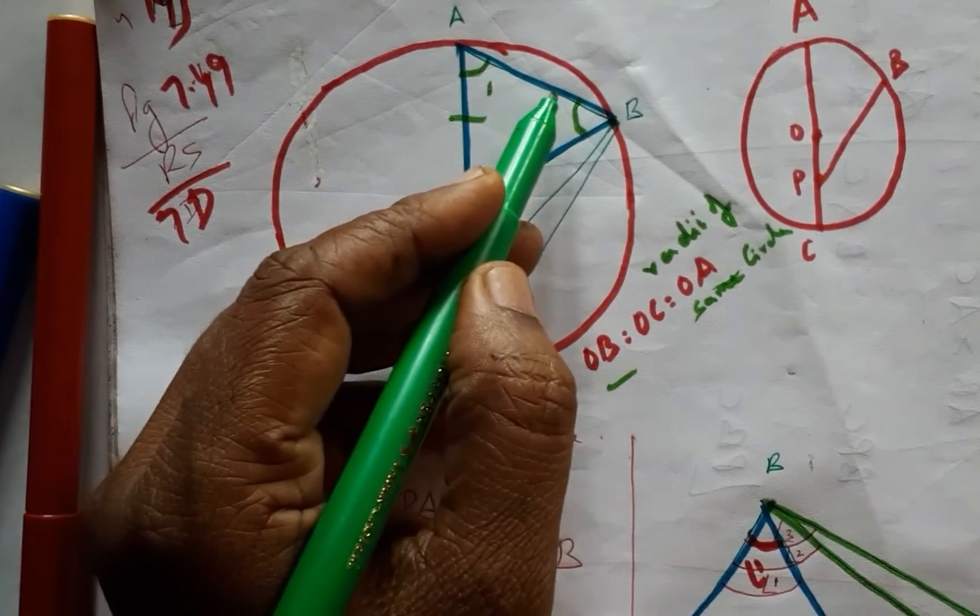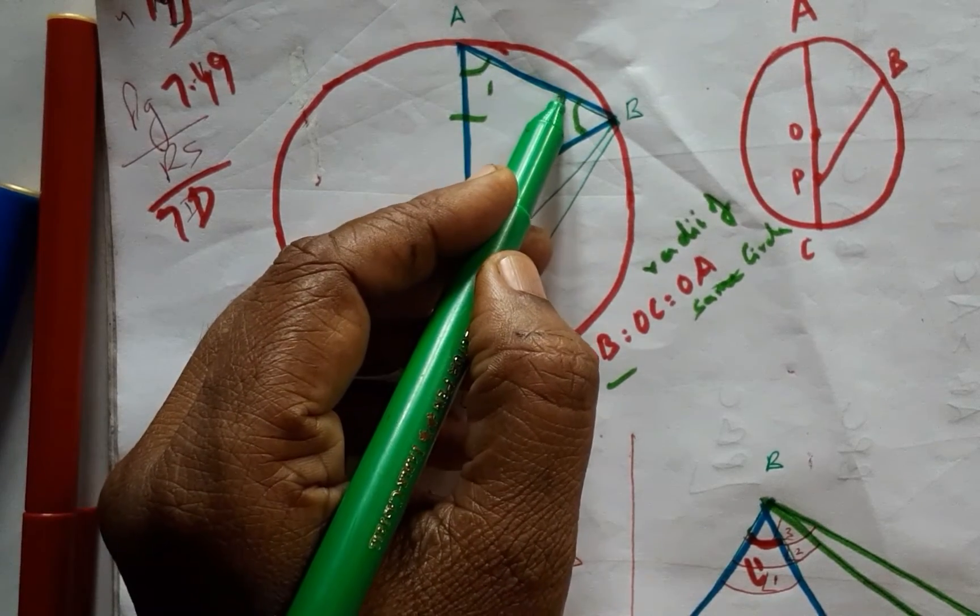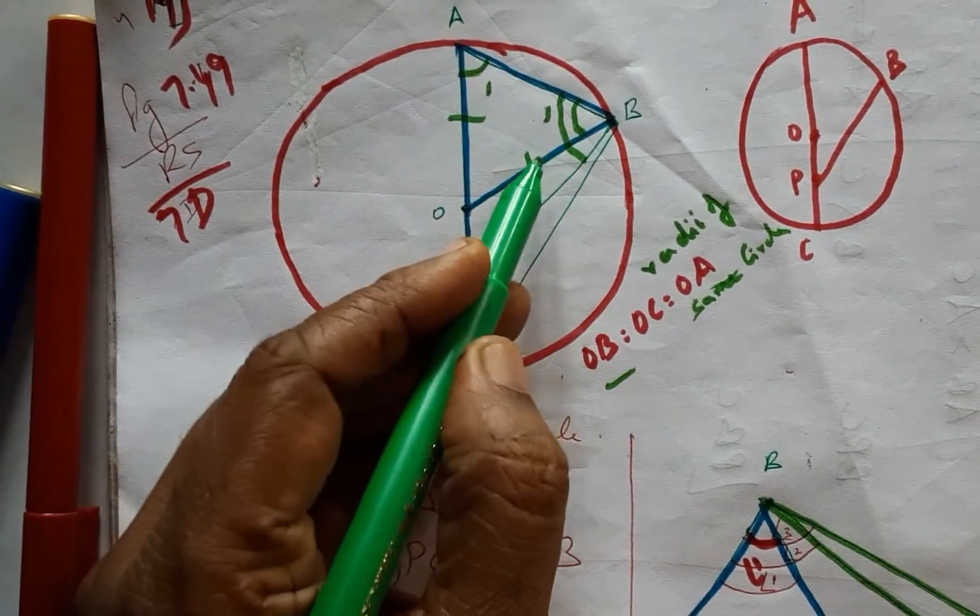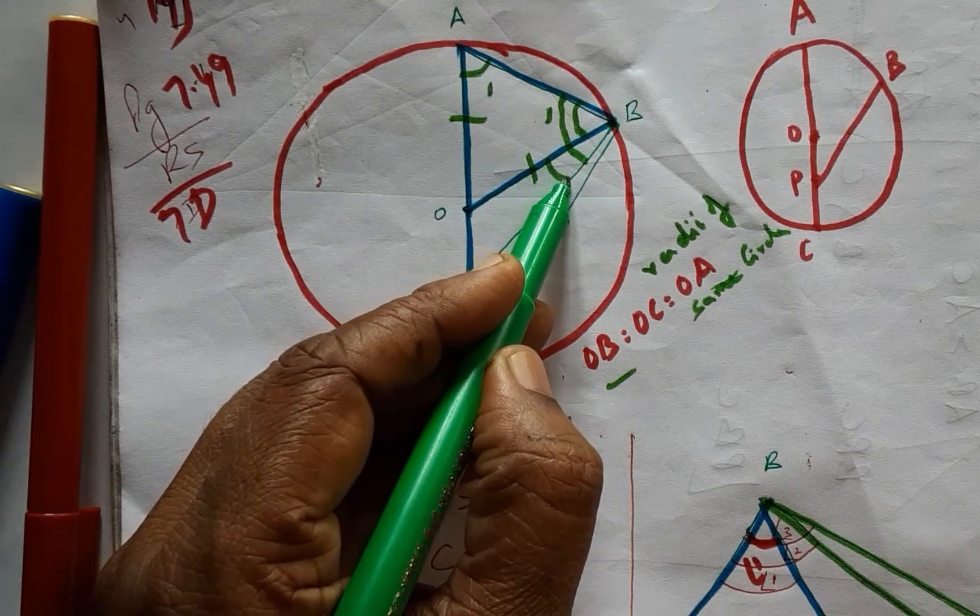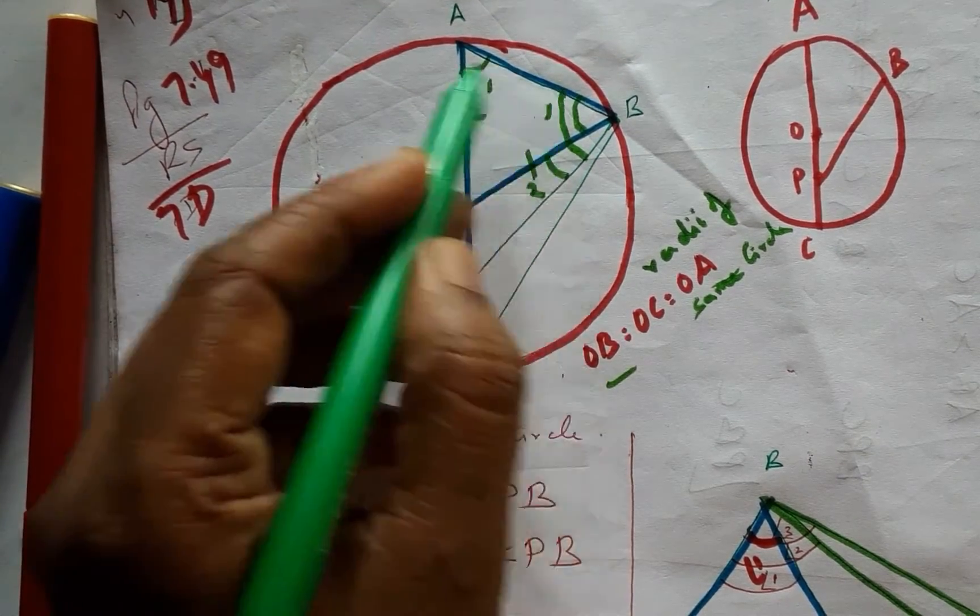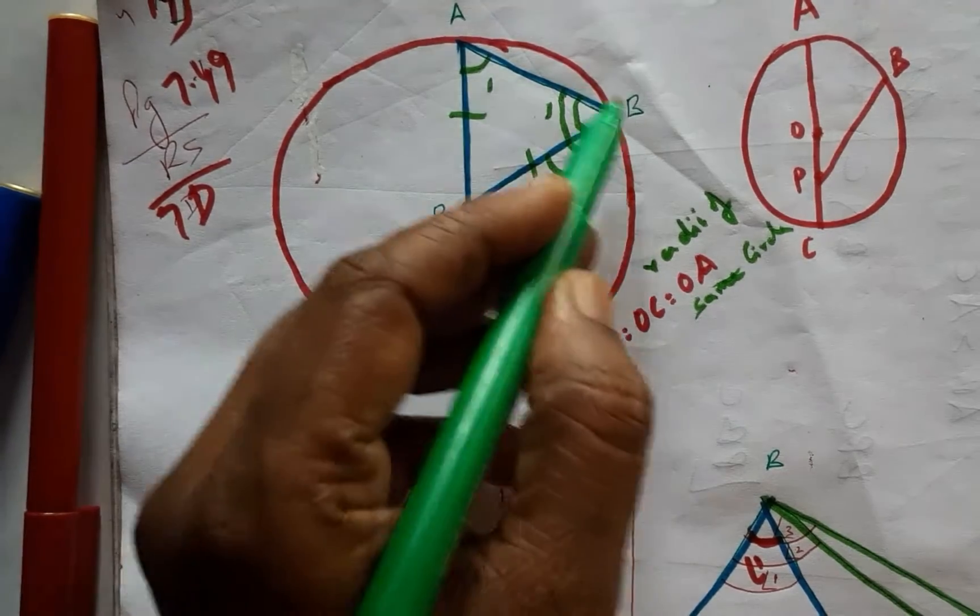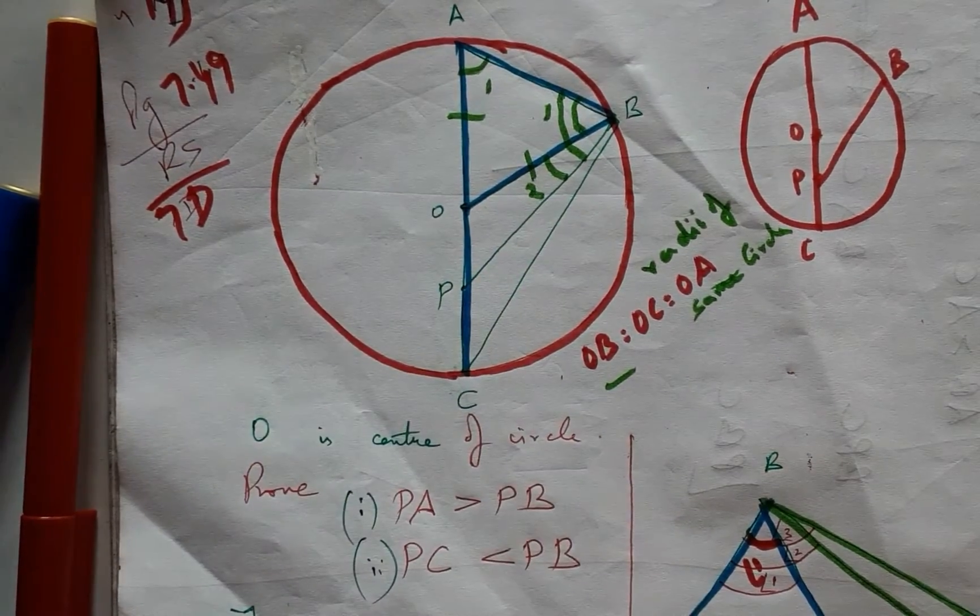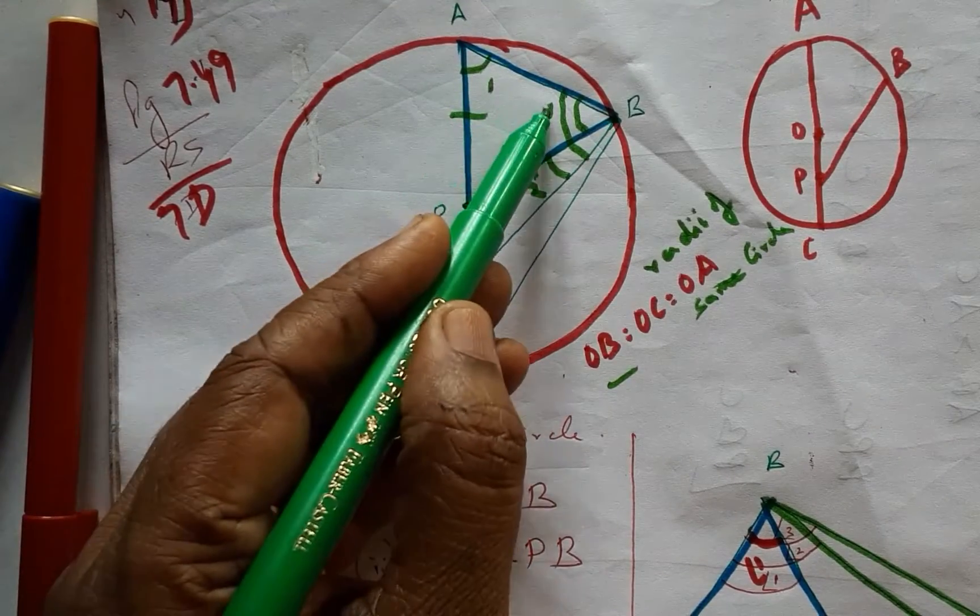As you can see, this one happens to be—if this is angle 2, this part is angle 2—then this PBA will be angle 1 plus angle 2. Therefore, angle 1 plus angle 2 is always greater than angle 1.